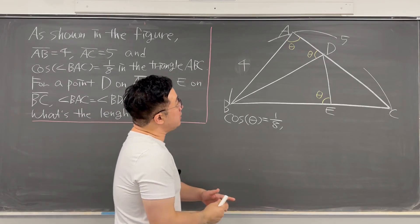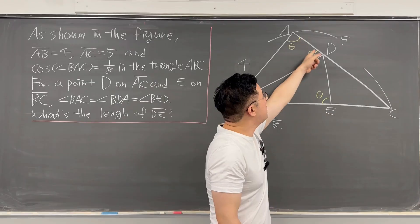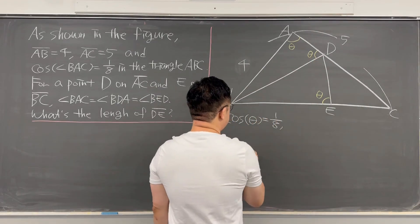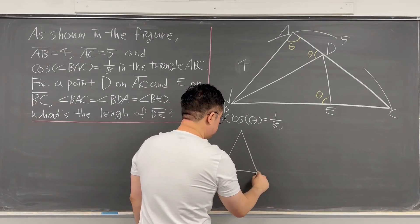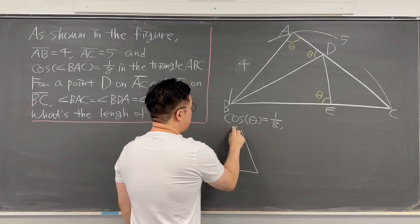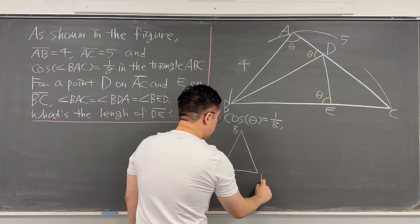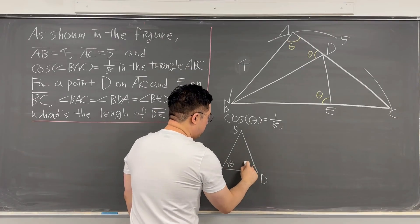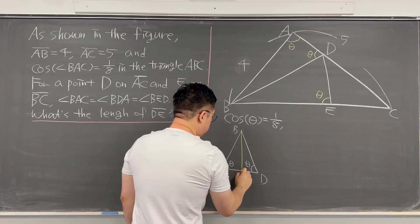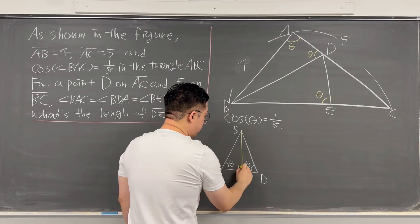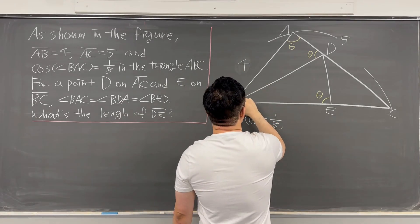Take a look at triangle ABD. This is an isosceles triangle because those two base angles are the same. So let's talk about this isosceles triangle ABD. We have vertex B and base vertices A and D, and those two base angles are both theta. If you split this isosceles triangle into two congruent right triangles, the side AB is already given to be 4, which means BD is also equal to 4.